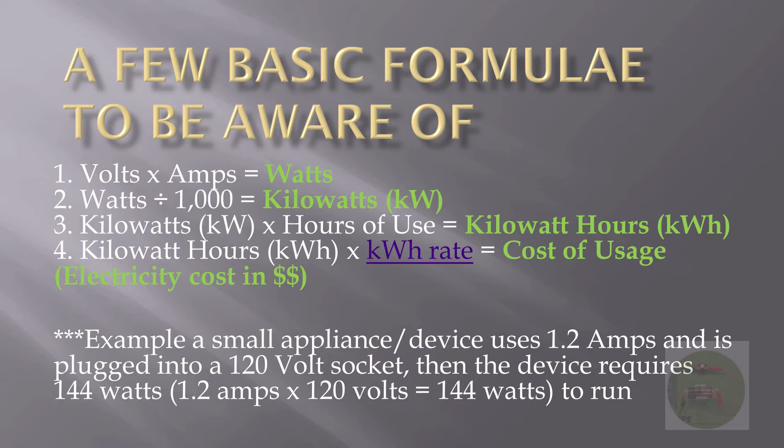Once you know the kilowatt hours, you can calculate how much the utility company is going to charge you to run that television. You take the kilowatt hours and multiply it by the utility rate per kilowatt hour, and that will give you the cost.